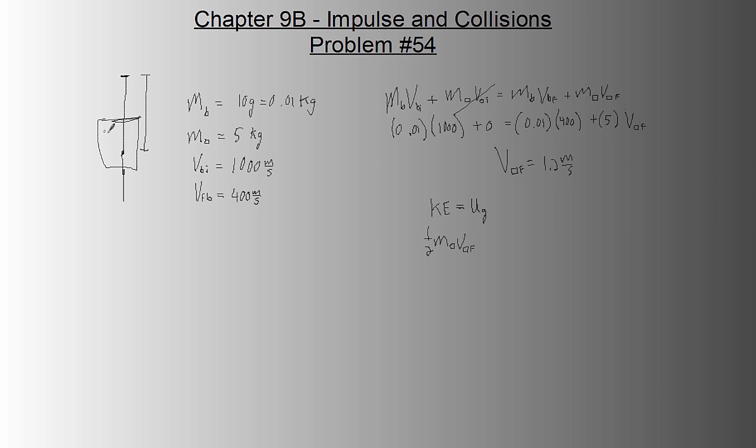We're assuming, by the way, that the block doesn't move while the bullet goes through it. It's not a completely realistic assumption, but it's not any worse than a frictionless surface. Mass of the block times gravity times height is the formula for potential energy.